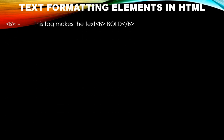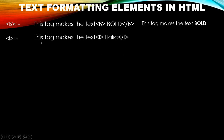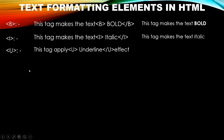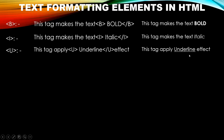The first text formatting tag is the B tag, which makes the text bold. Next is the I tag — italic — which displays the text in italic format. The third is the U tag — underline — which displays the contents with an underline. The text placed between the opening and closing U tags will be displayed with the underline effect.